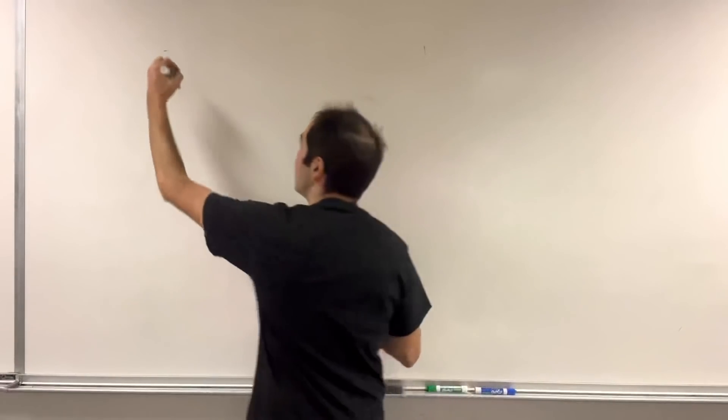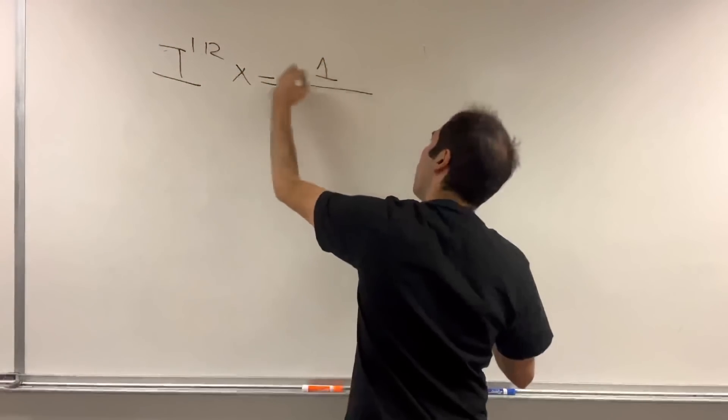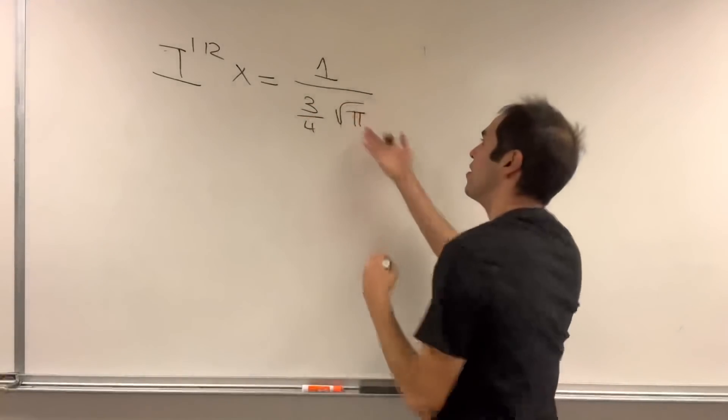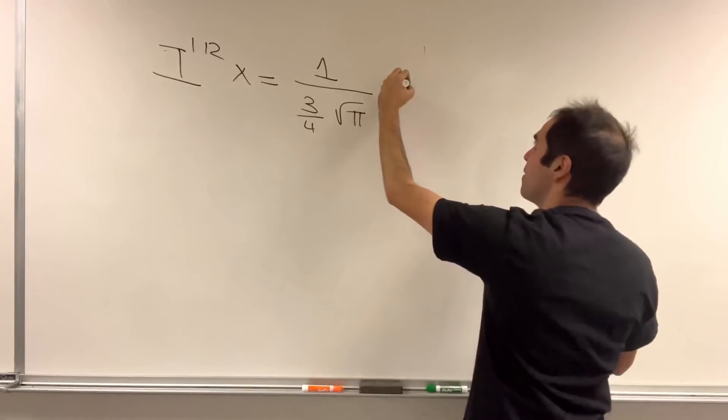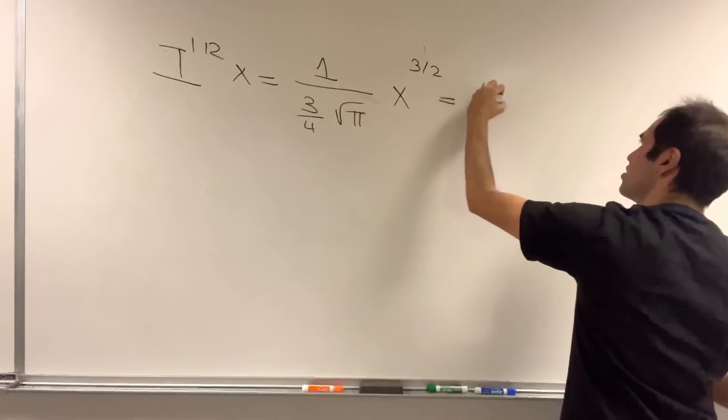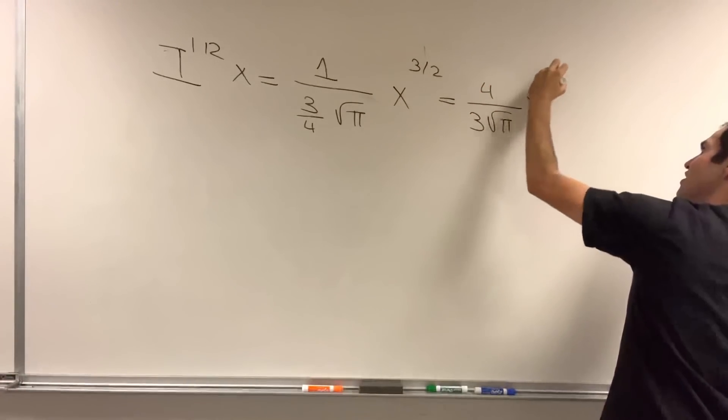Because, what did we get? The half integral of x. It's 1 over, remember this 3 quarter business, gamma of 1 half, which is square root of pi, x to the 3 halves. Which, if you like, you can just write as 4 over 3 square root of pi x to the 3 halves. Wow! How cool is that, right? That we have this explicit expression.